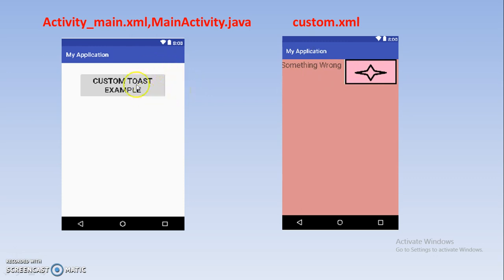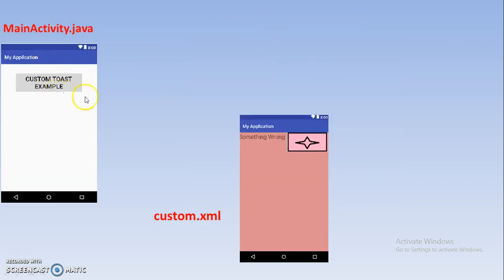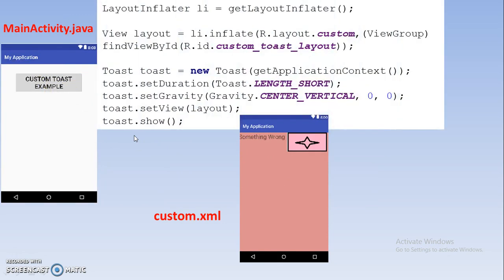So you need one activity consisting of XML and Java, and one more separate XML file. For creating this you need the code like that, and that coding you simply write under the button component. This code is in MainActivity.java. In that file you have to define the object of LayoutInflater using getLayoutInflater — this class is used to access the XML file, which is nothing but custom.xml.